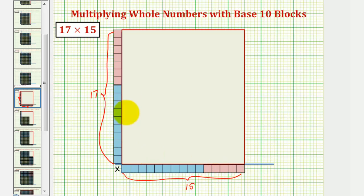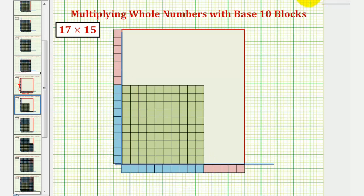Notice how this forms a rectangle outlined in red. The area of this rectangle is equal to the product of 17 and 15. So now we'll fill in this area using our base 10 blocks. Notice in the lower left-hand corner here, we can fit a 10 by 10 block, which would be a 100 block. And that would look like this.